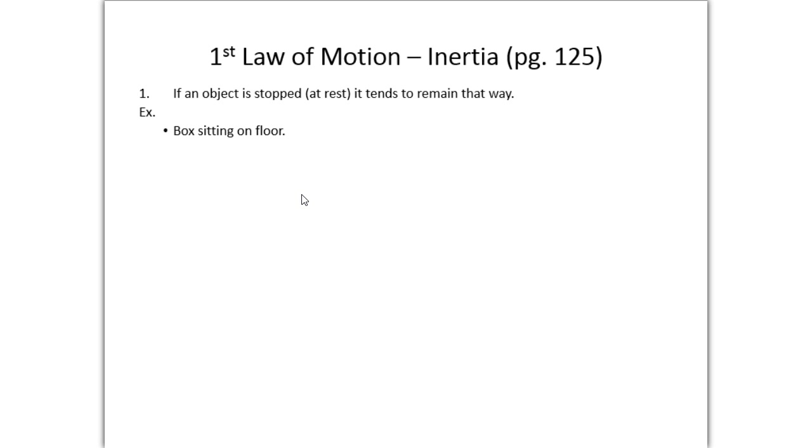So as an example, if you had a box sitting on the floor, the box won't move unless a force acts upon it. Or dishes on a table, they'll remain and stay there. They're at rest, so there's no need for them to move. If an object is at rest, it will tend to remain at rest unless it's acted upon by an outside unbalanced force.